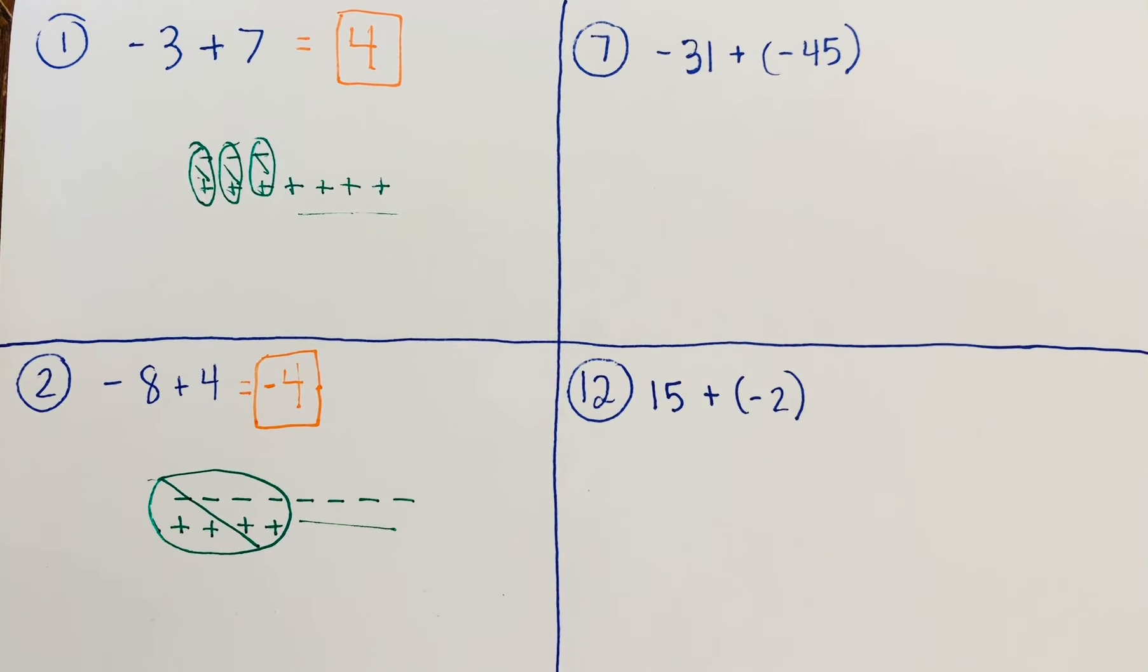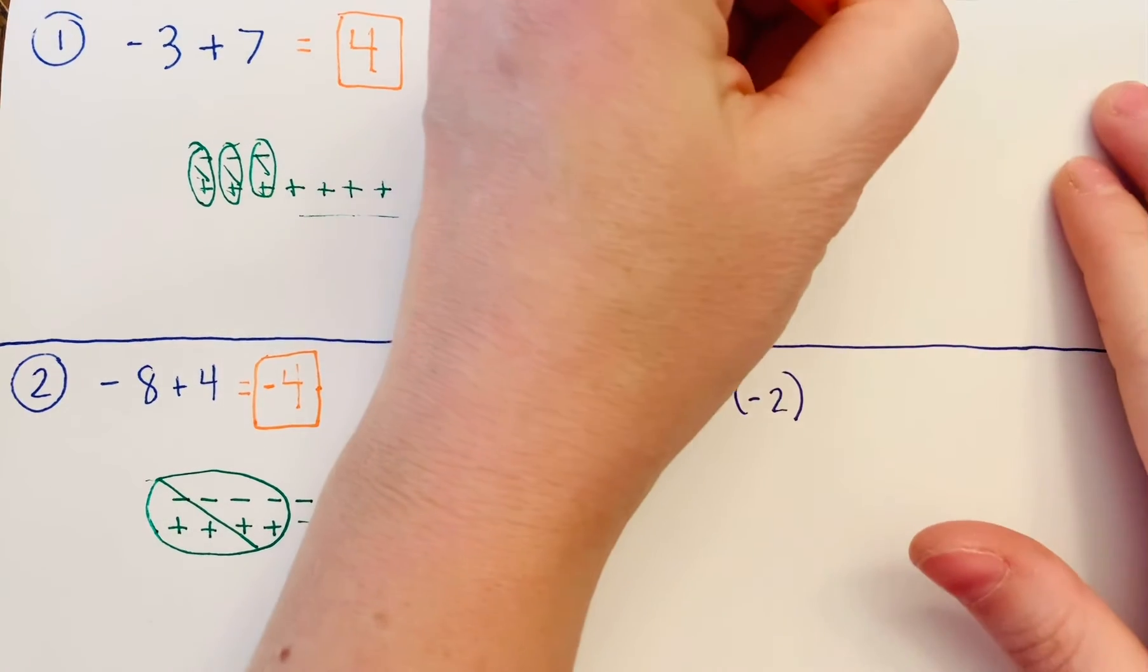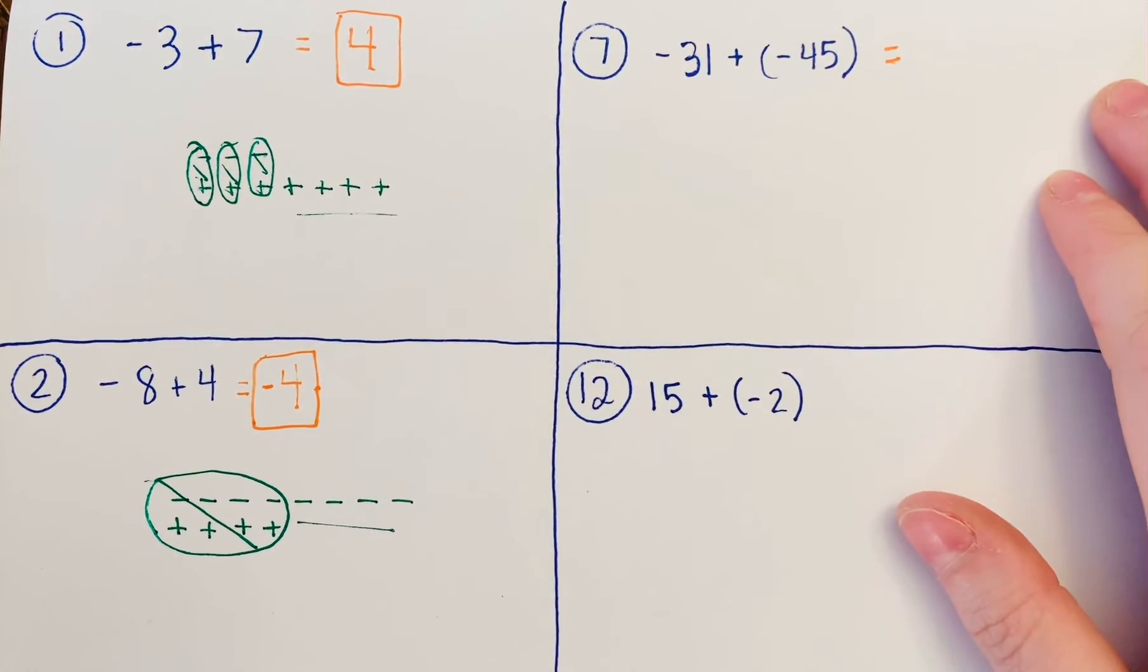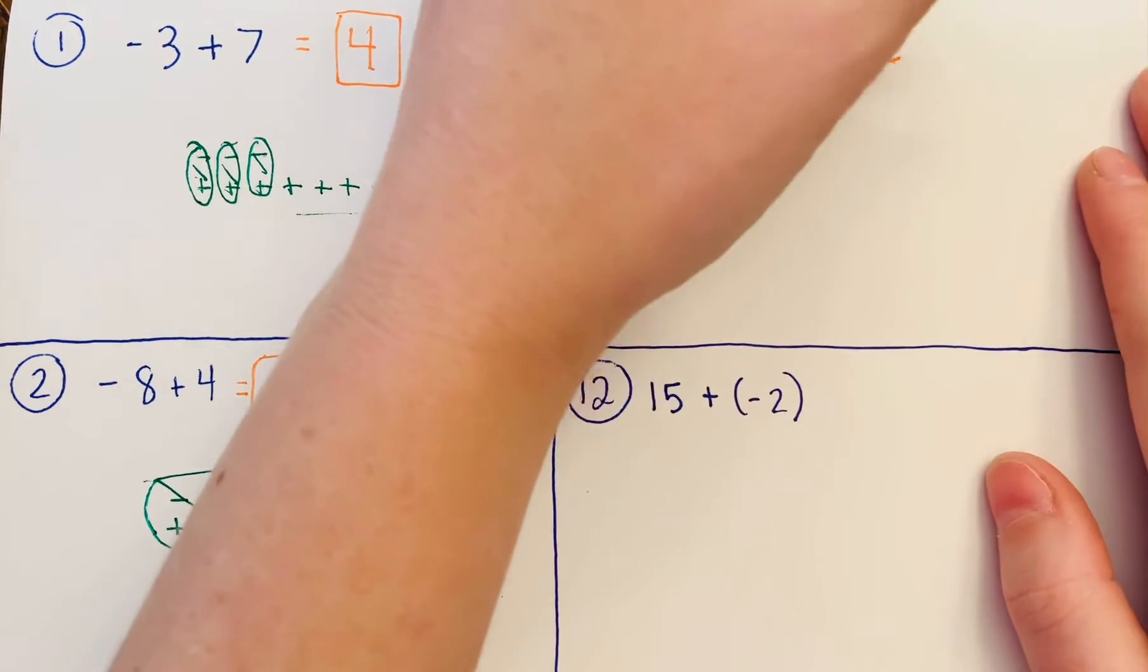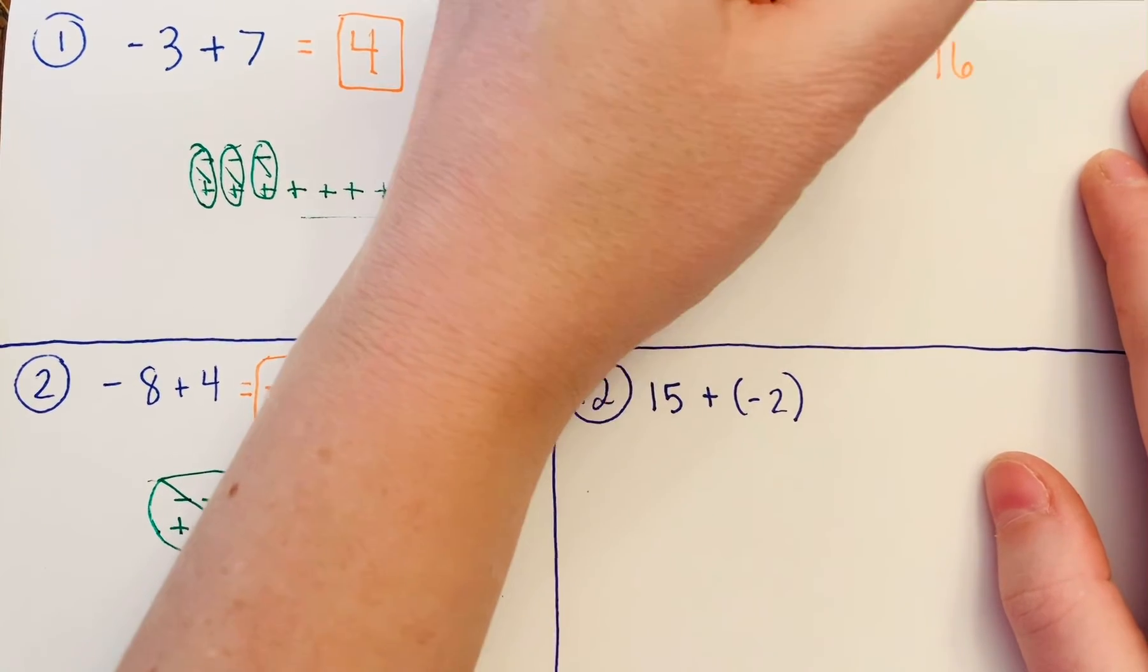Number 7 looks different for a couple reasons: the numbers are bigger, and you're dealing with two negatives. Instead of different signs, you have same signs this time. With same signs you find the sum—so instead of subtracting we're adding. 31 + 45 = 76, and because they're both negative we keep the same sign, so it's -76.